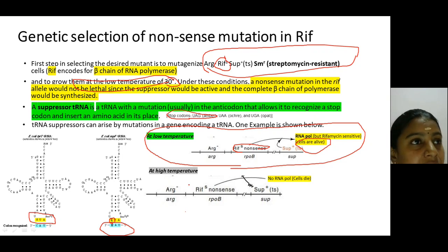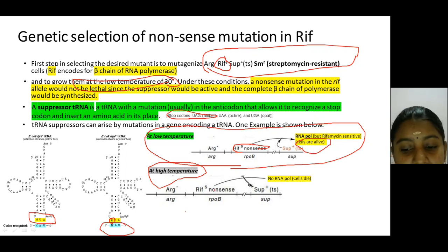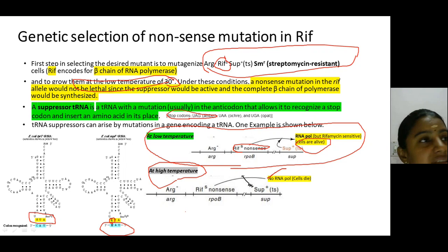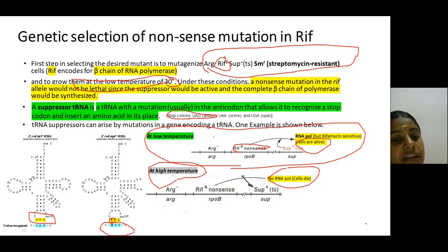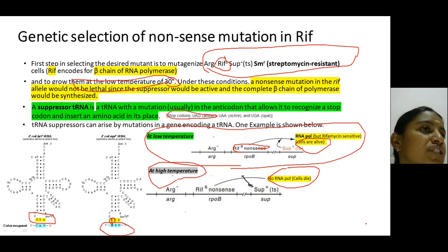At high temperature — above 42°C — the suppressor tRNA is not functional. It cannot bind to the nonsense mutated codon, so translation cannot continue, and RNA polymerase production is stopped. The cells would die. These aspects — the temperature-dependent suppressor tRNA activity and the rif-S versus rif-R alleles — are exploited for the genetic selection of the nonsense mutation in the rif allele.